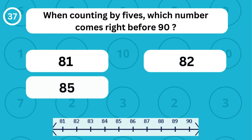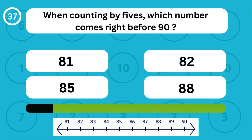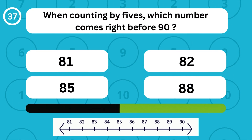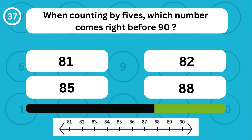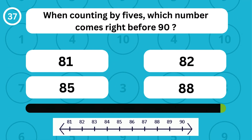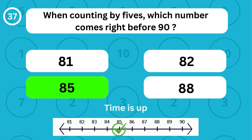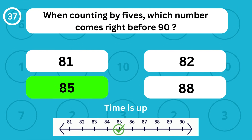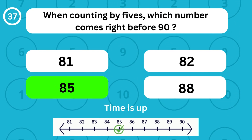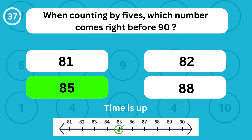When counting by fives, which number comes right before 90? When counting by fives, the number 85 comes right before 90.